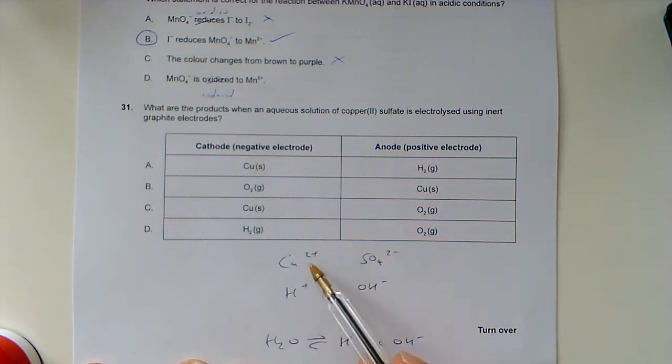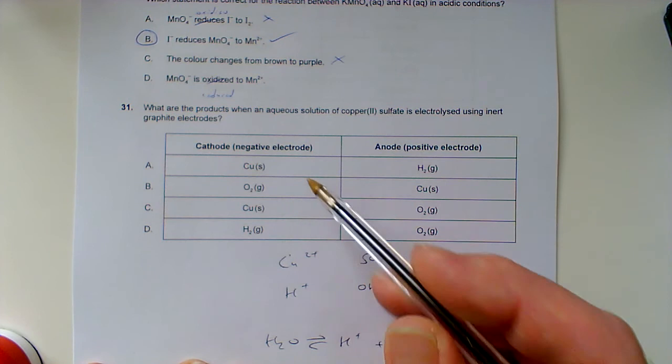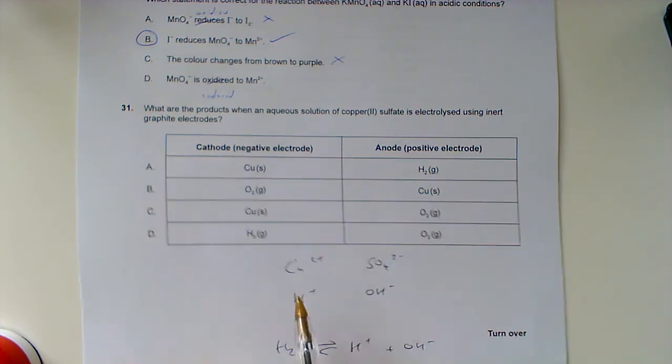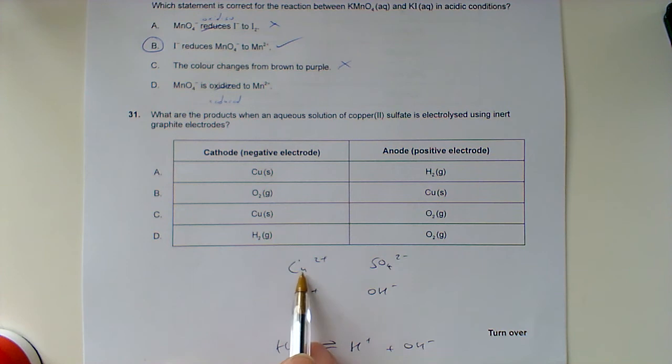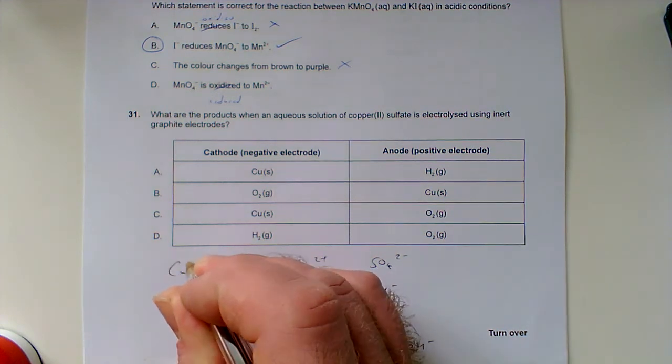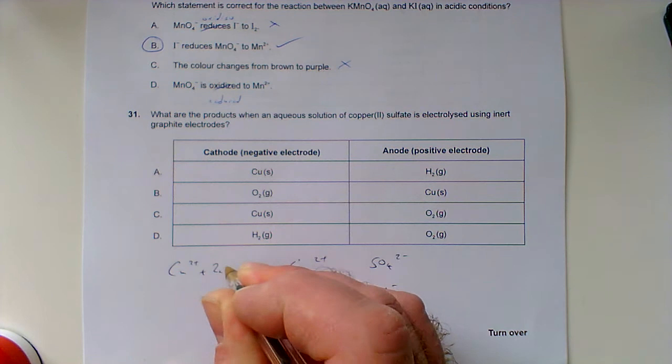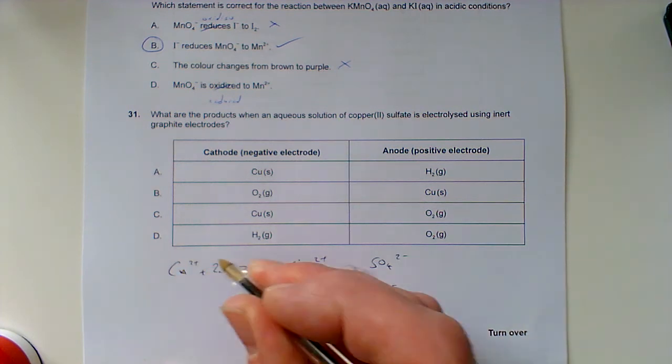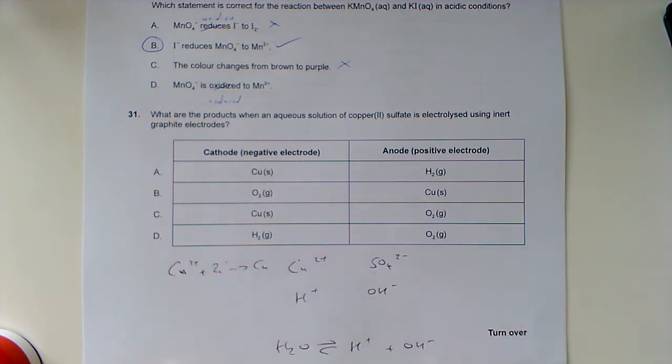Opposites attract, so the positive ions will be attracted to the negative electrode. Do we get copper or hydrogen? We get whichever one is lowest in the reactivity series, because the lower it is, the less happy it is being a positive ion. Copper is less reactive than hydrogen, so copper will be discharged.